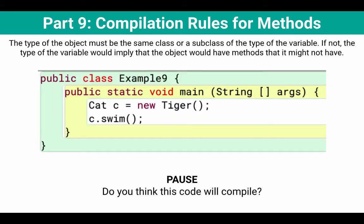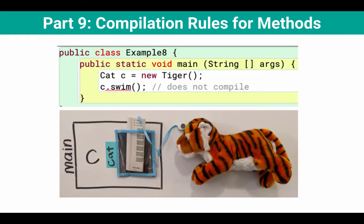I've got a main method here. Since programming languages are designed by humans, I want you to think: do you think that Java would decide that this code should compile? You should pause here. The code does not compile. We know that the Tiger class does have a swim method, but a Cat class does not have a swim method.